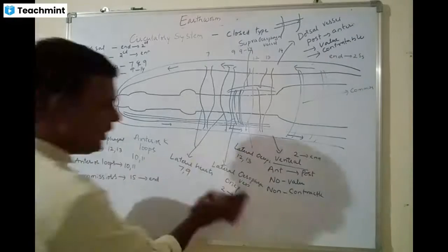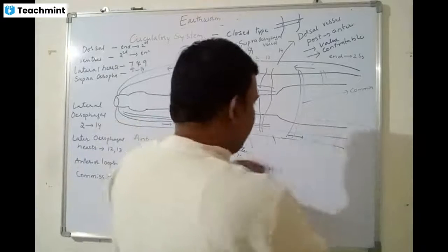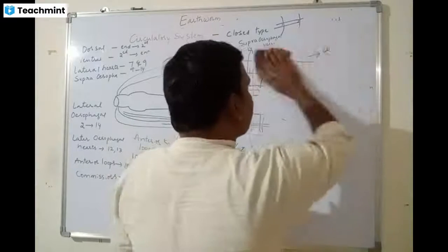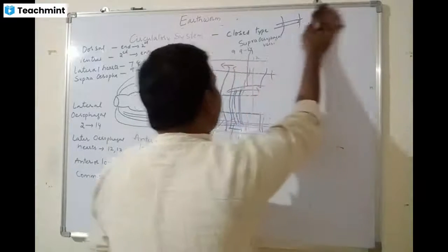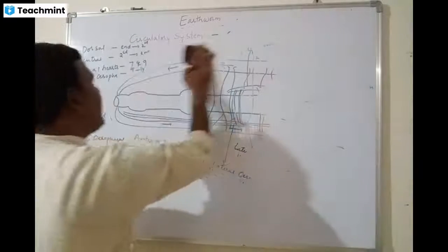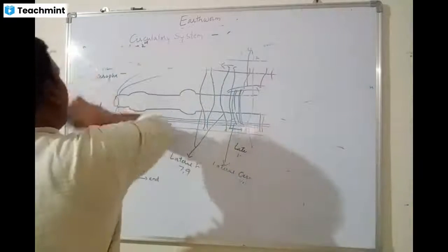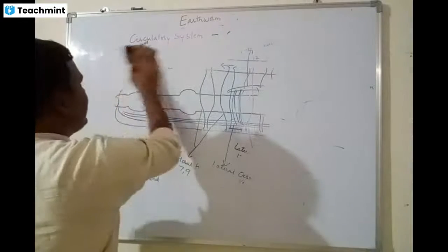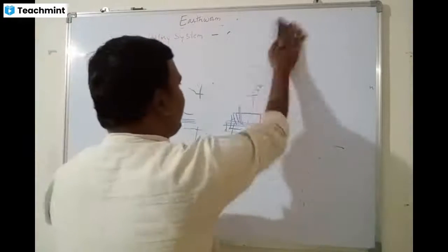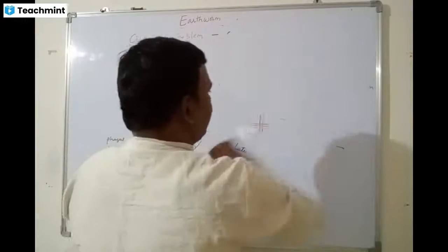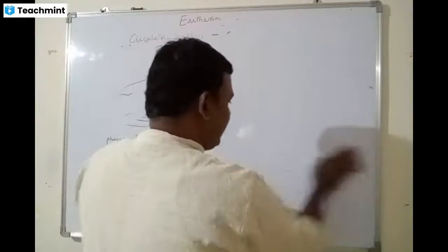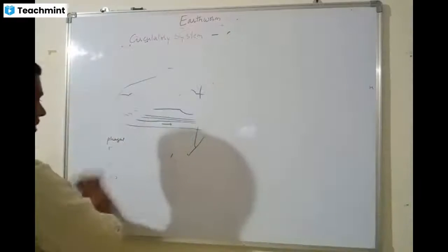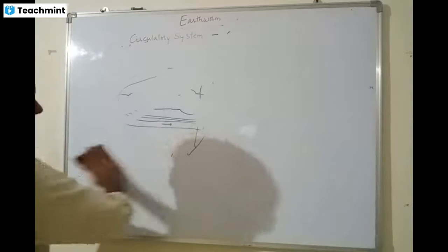The respiratory system is very simple in earthworms — respiration happens through the body wall. There are no special respiratory structures in earthworms.